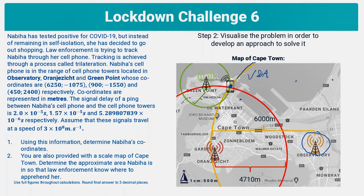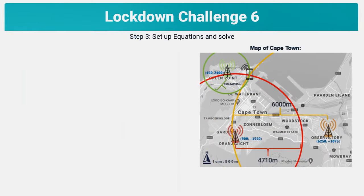So it looks like Nabiha is doing some shopping at the V&A Waterfront, and that would be our answer for question two if you plotted your circles accurately. Step three is to set up some equations to solve this question. We have three circles and the coordinates of their centers, so we can use analytical geometry to create equations.